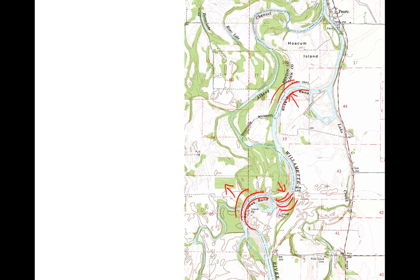Each of these meander loops is going to move in the directions indicated. The Willamette River is also terraced. Terraces occur when there's a change in the river's sediment load or discharge, causing it to erode downward and abandon its older, higher floodplain.